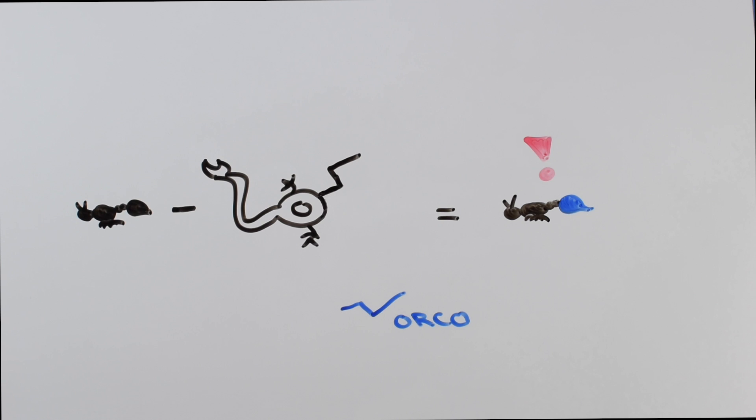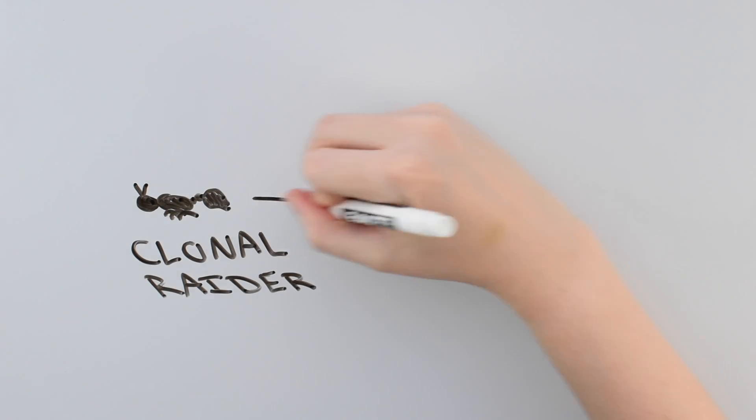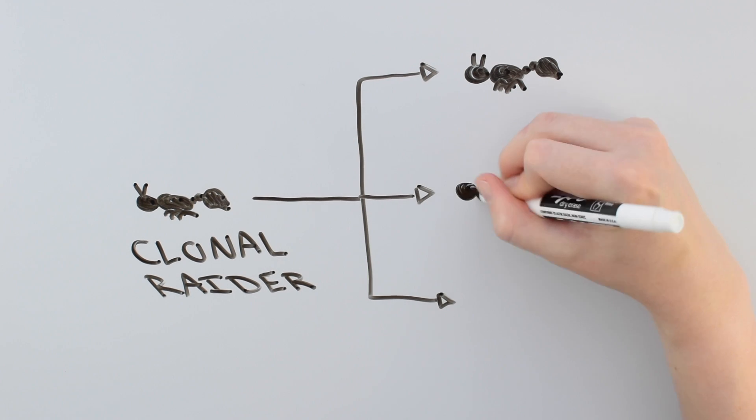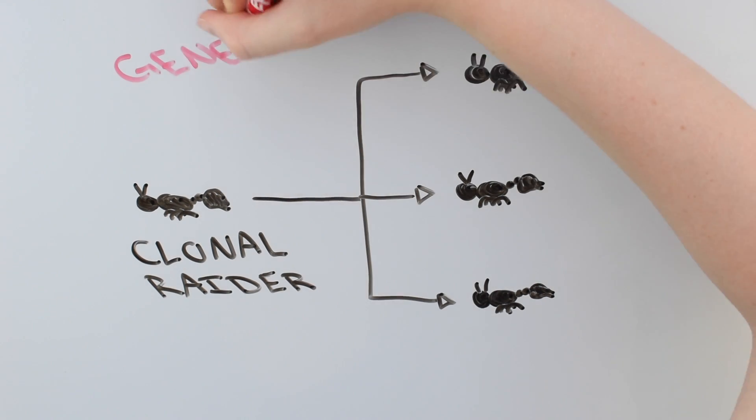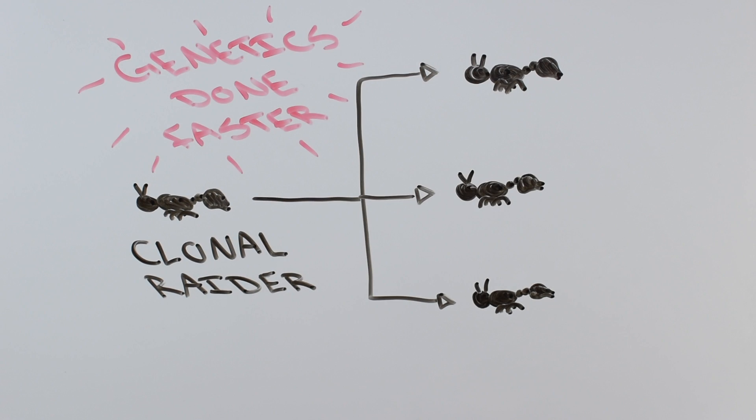For many ant species, creating a mutant is practically impossible to do. These researchers got around that problem by using a special ant species called the clonal raider ant. They're called clonal because they make exact duplicates, or clones, of themselves to keep up the population. This clonal colony structure means that getting a mutant ant is much faster than with ants that have a sexual reproductive system.